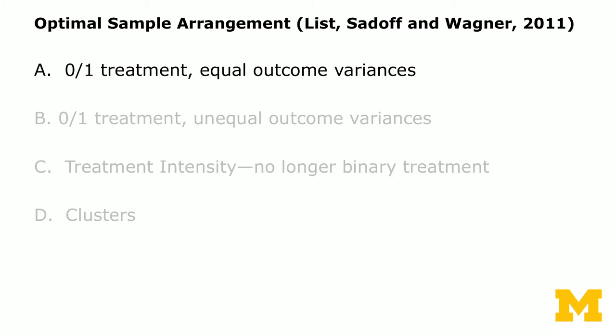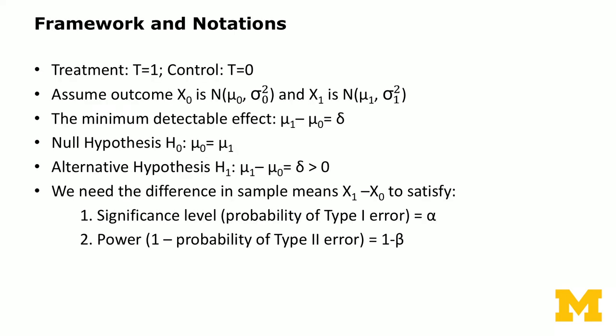Now we're going to derive these in a more rigorous way. The derivations come from the List, Sadoff, and Wagner 2011 paper. We will go through the first two parts: the simplest case with a 0-1 treatment — 0 for control and 1 for treatment — where the outcome variables are equally noisy in both conditions.